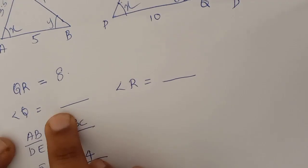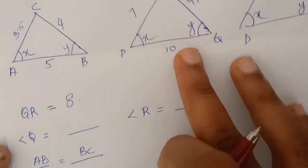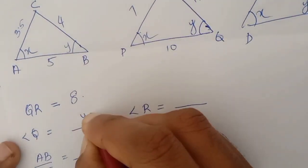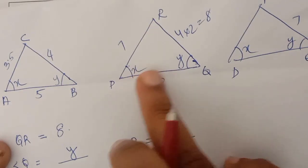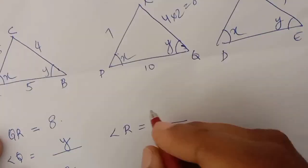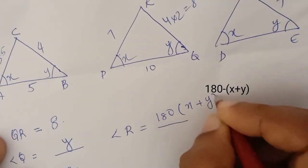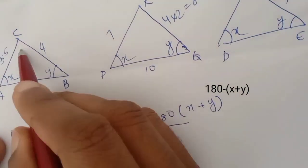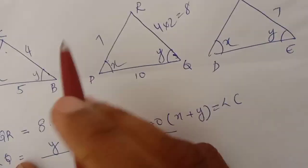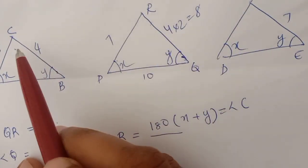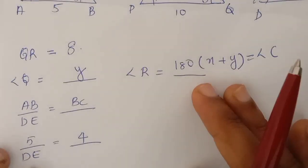Angle Q is noted, and angle R is at the same position. 180 minus (x plus y) is equal to angle C. So angle C is equal, and angle R is equal to RC. Let's see the next question.